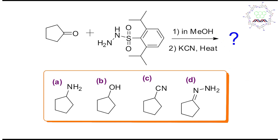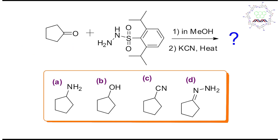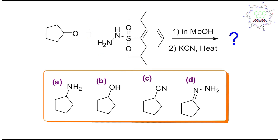I believe you have tried by yourself — now it's my turn to give you the answer. If you look at this ketone, cyclopentanol, it's a pretty simple ketone. But if you look at this reagent, it's tosyl hydrazine — it's a little unique. Only the nitrogen part can react, and if you look at this sulfur center, it is sterically protected by these two big isopropyl groups.